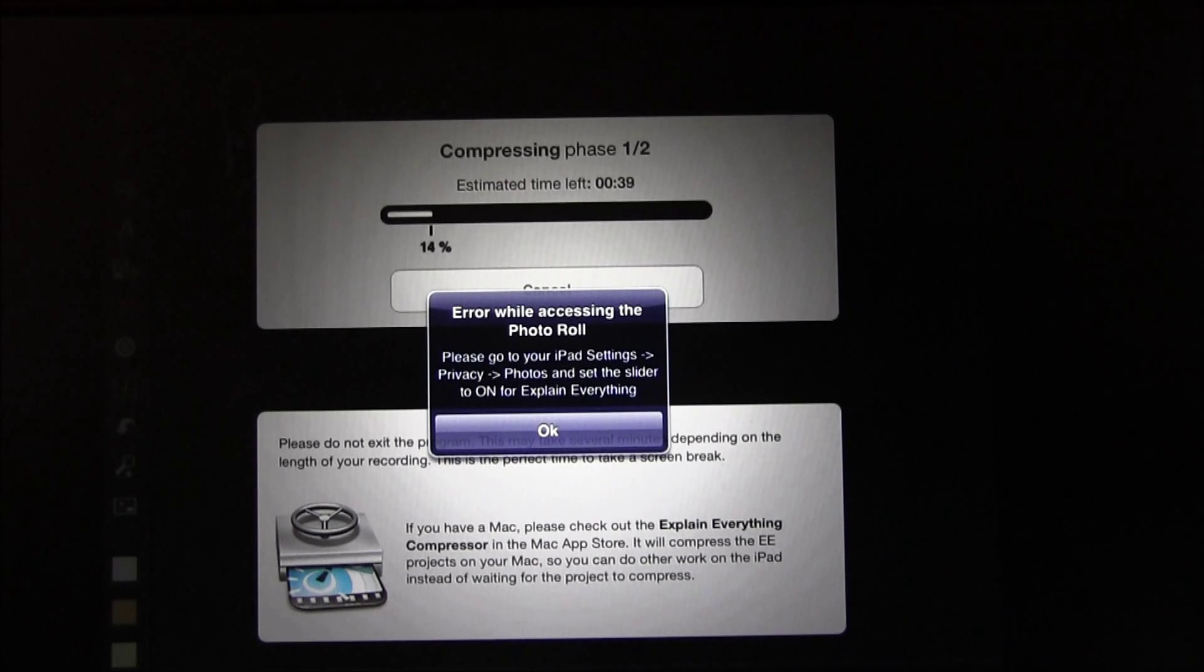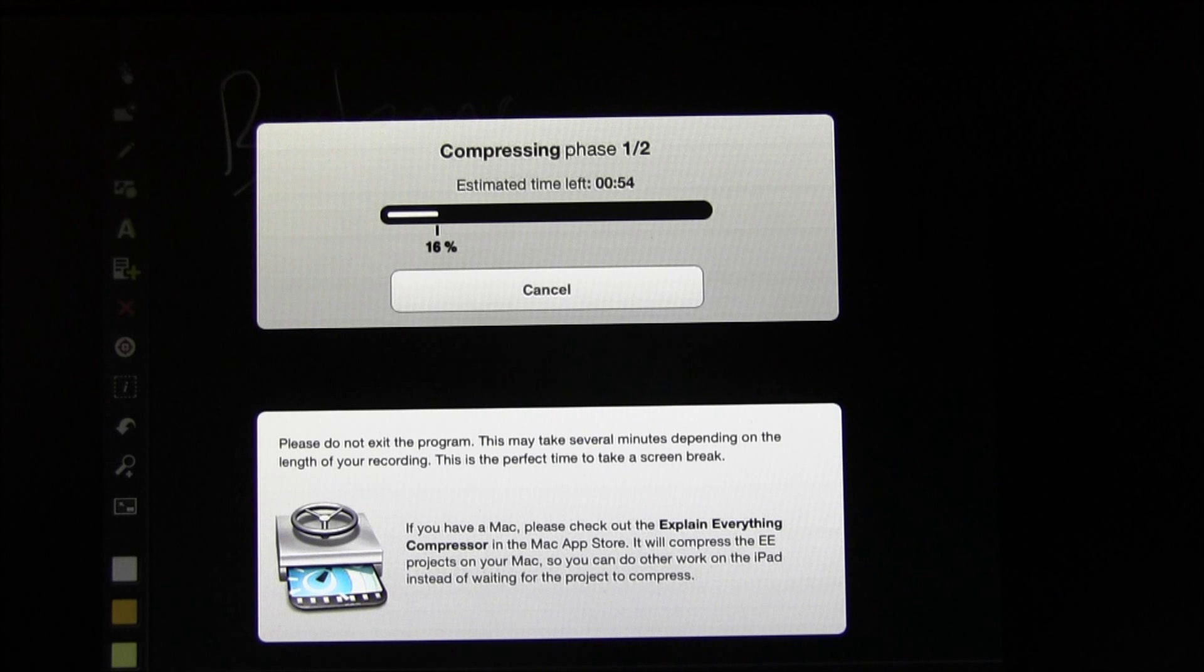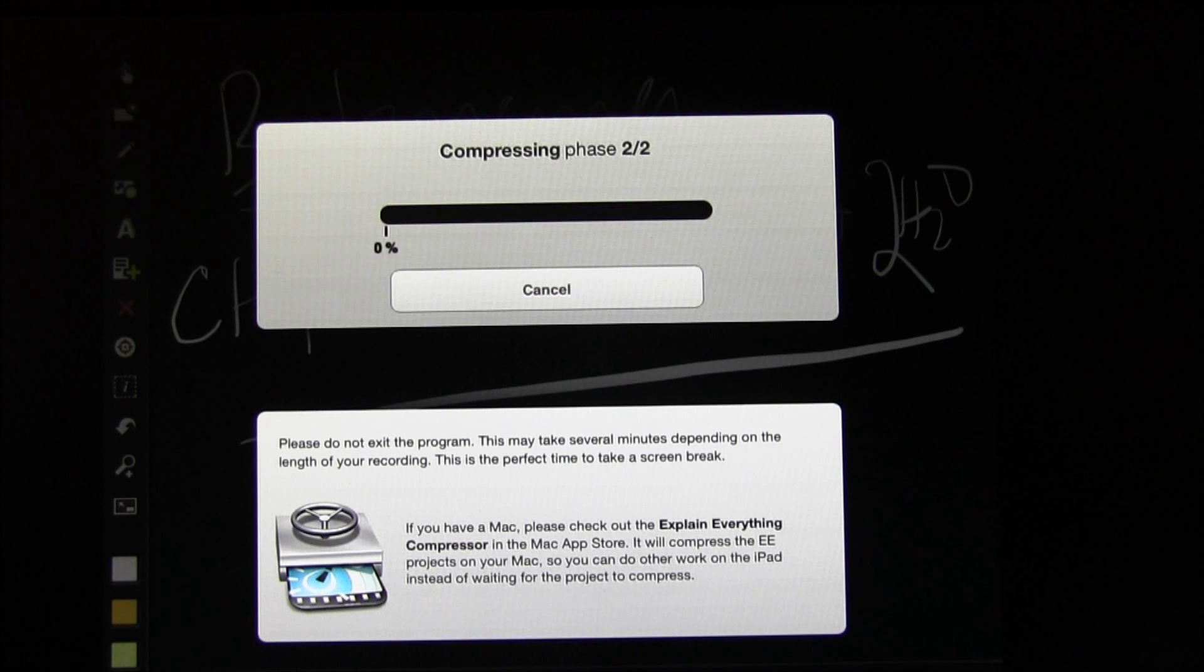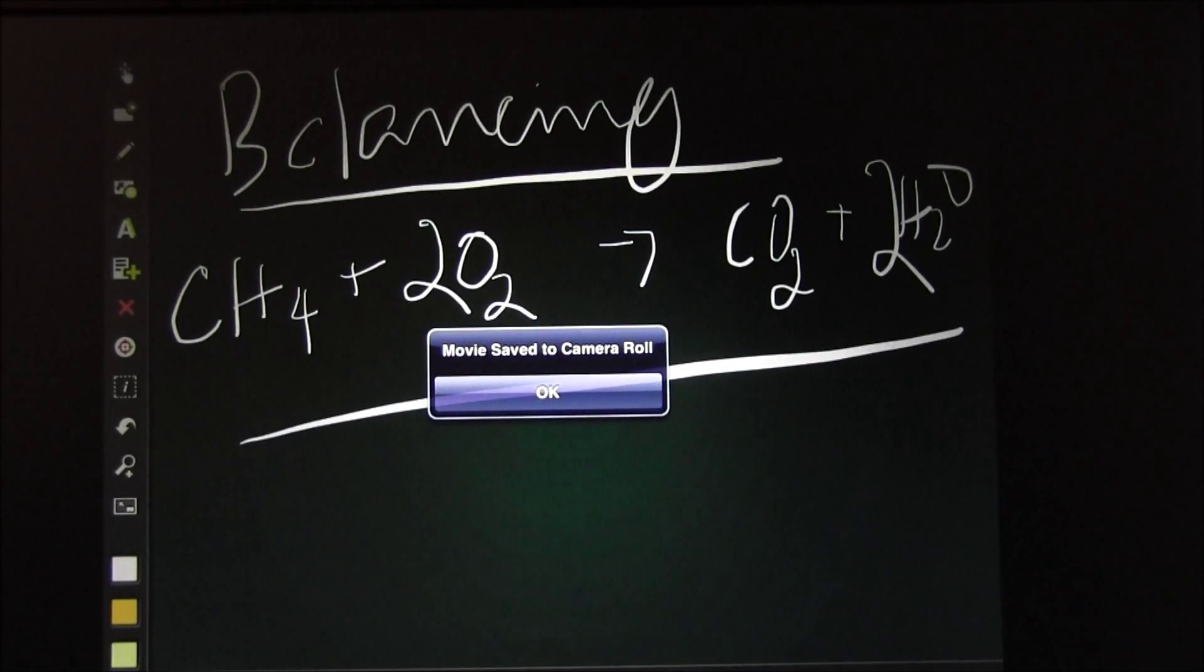It's giving me a warning, but other than that, it should be fine. It's compressing the movie, so it'll take a while. Done. Now the movie is saved to the camera roll. I can actually export it directly from my camera roll directly into YouTube.